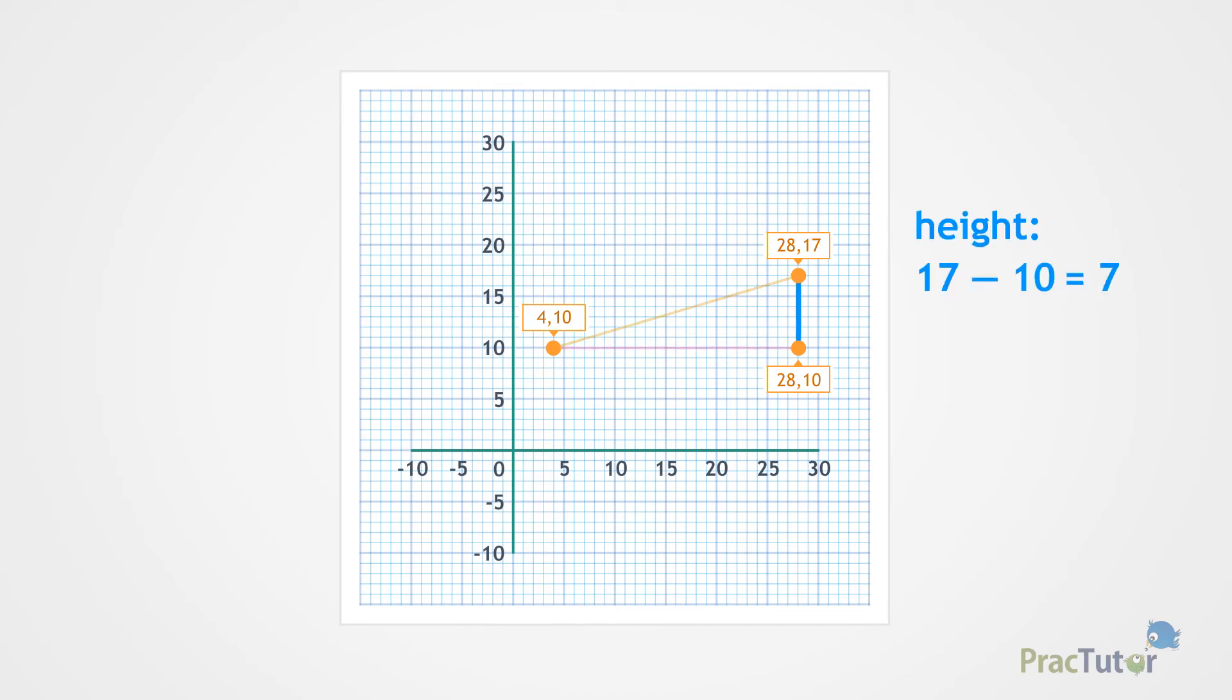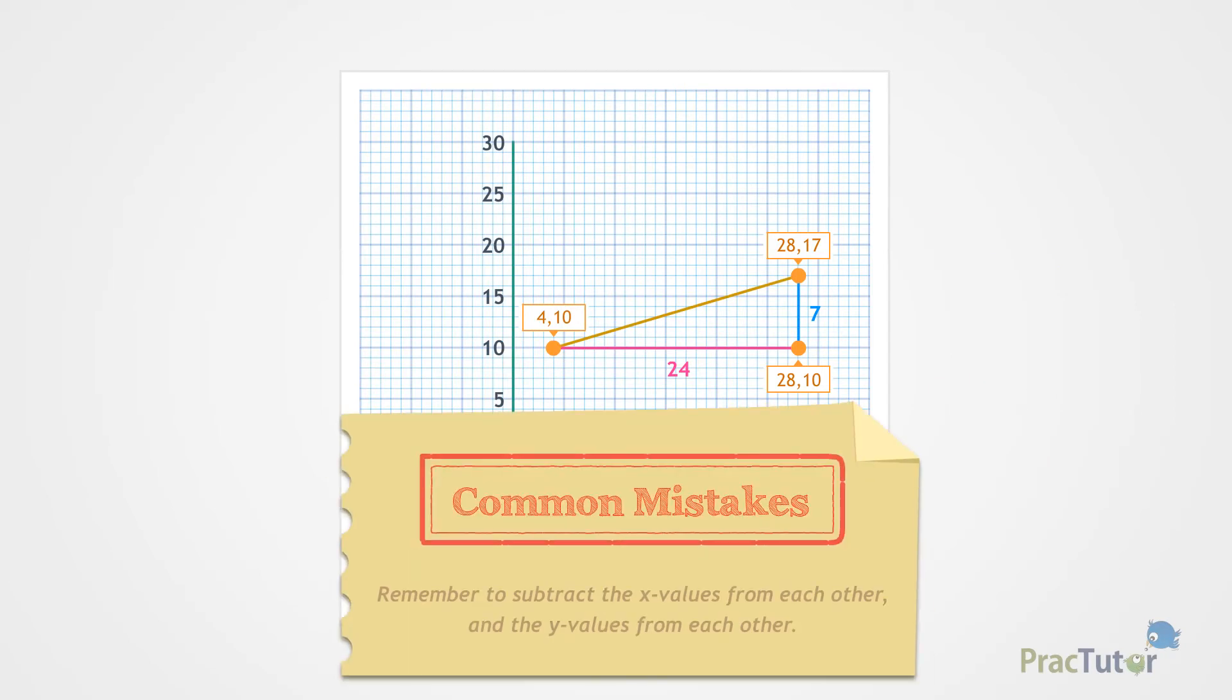You can find the height of the triangle by subtracting the y values from each other, and the length of the base by subtracting the x values from each other. When you see similar problems, remember to subtract the x values from each other and the y values from each other.